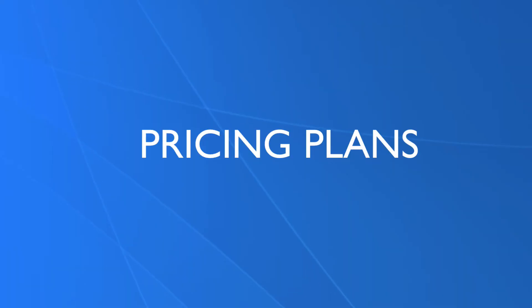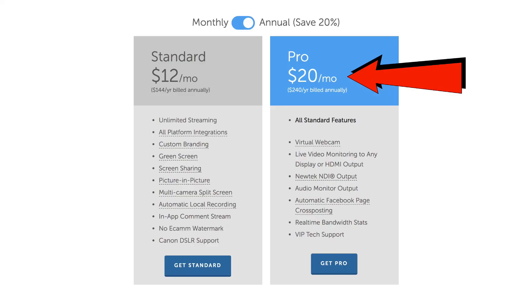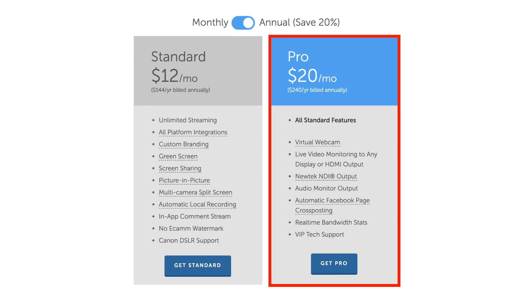You can also keep up with the latest developments of the software. The standard plan is only $12 per month or $144 per year. However, I highly recommend getting the Pro plan, which is only $20 per month or $244 per year. It includes all the standard features, plus a virtual webcam, live video monitoring to any display or HDMI output, NDI output, audio monitor output, automatic Facebook page cross-posting, real-time bandwidth stats, and VIP tech support.